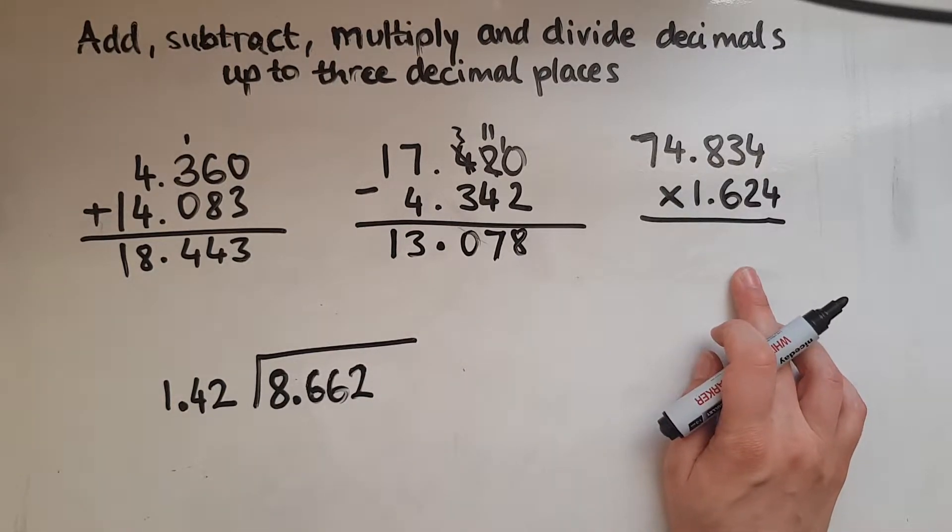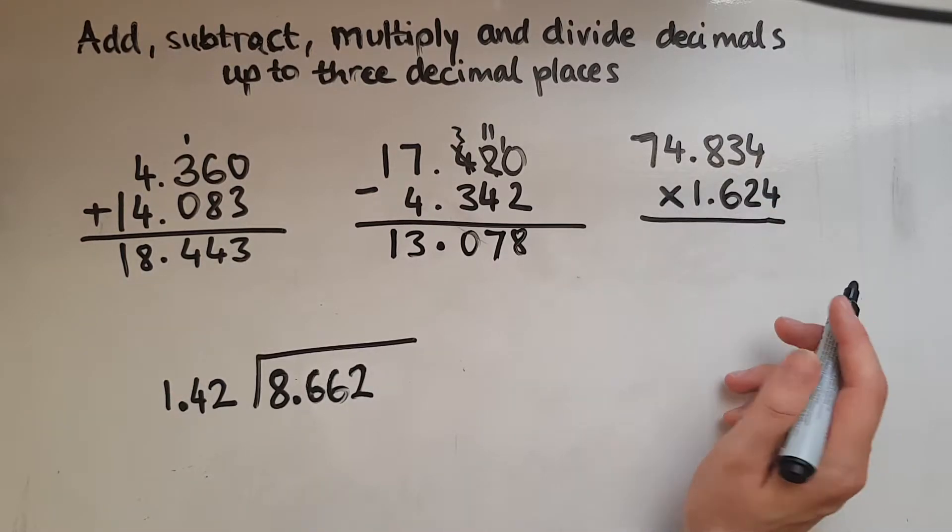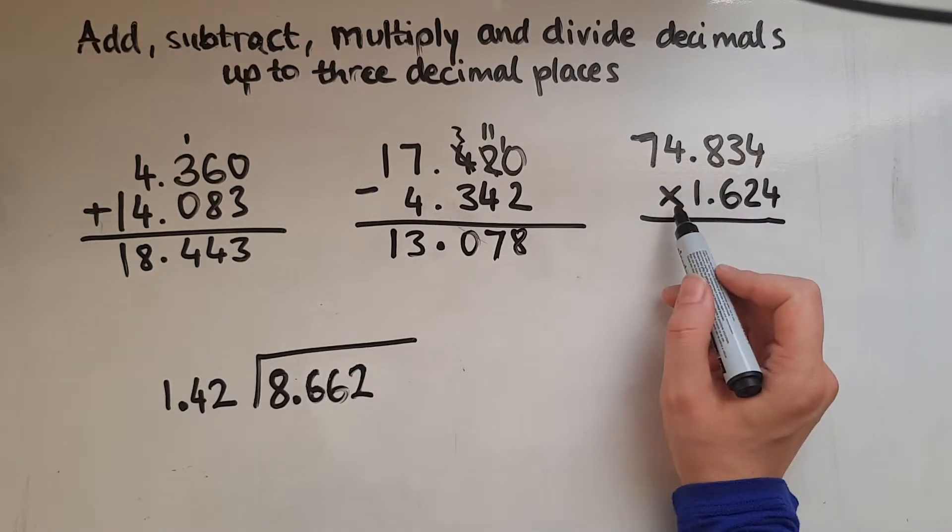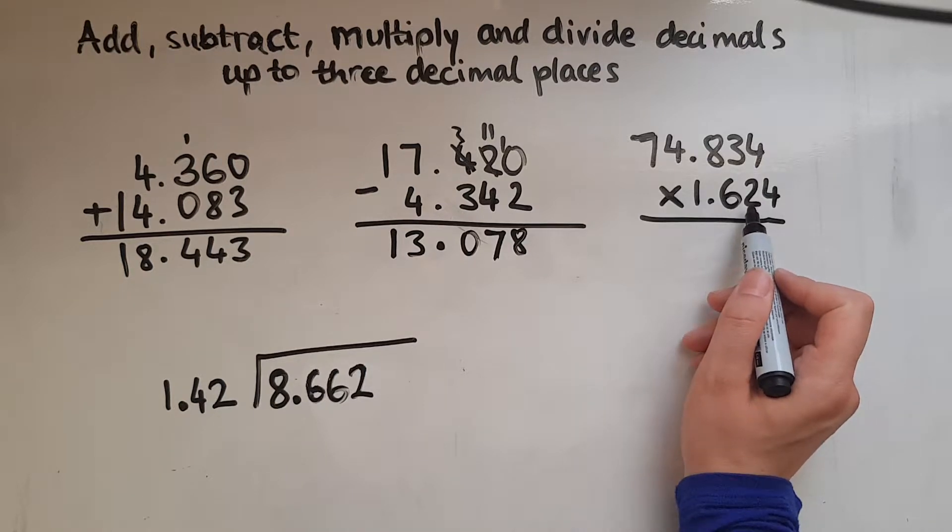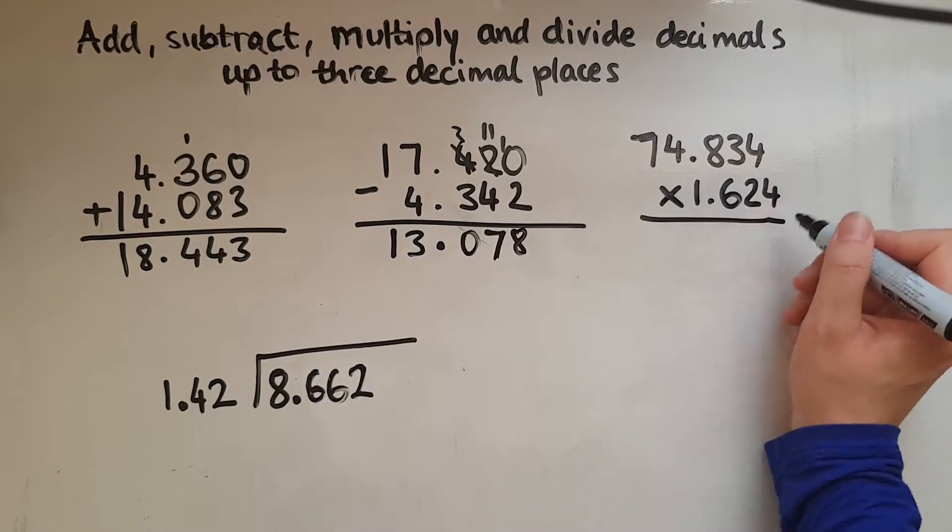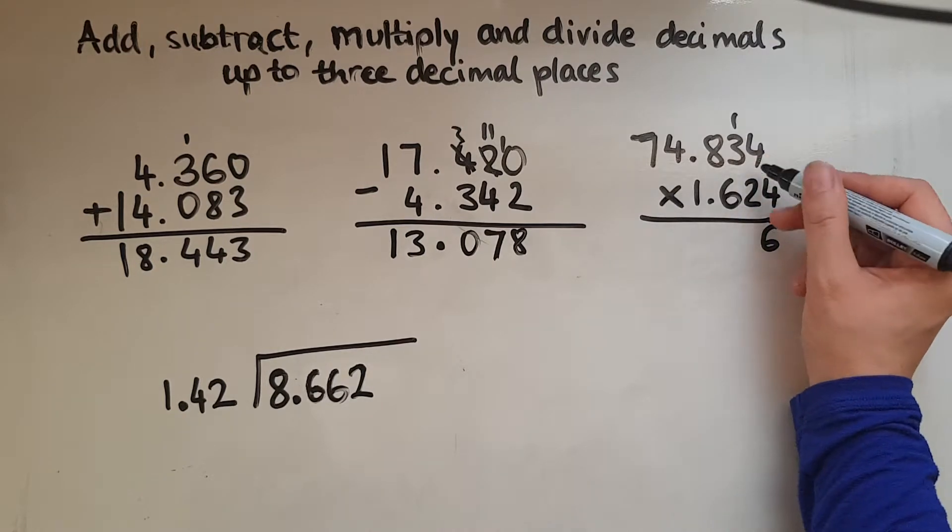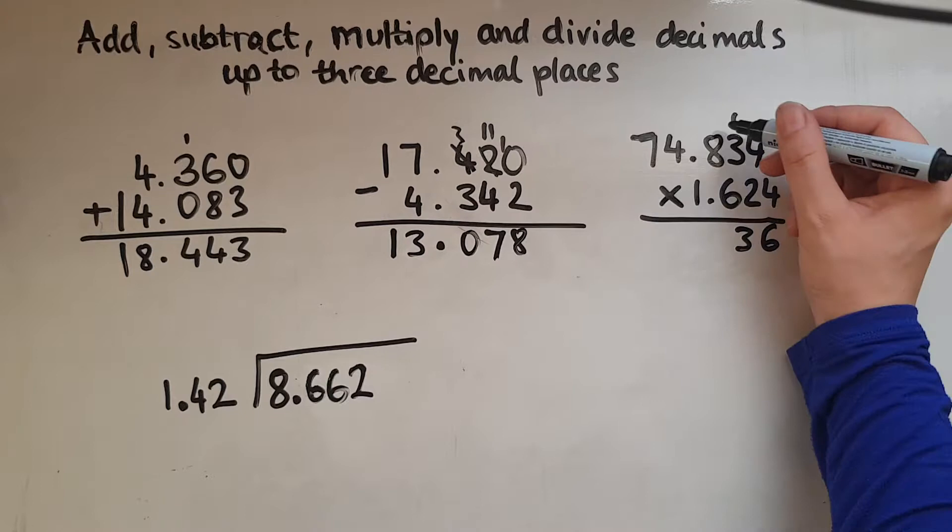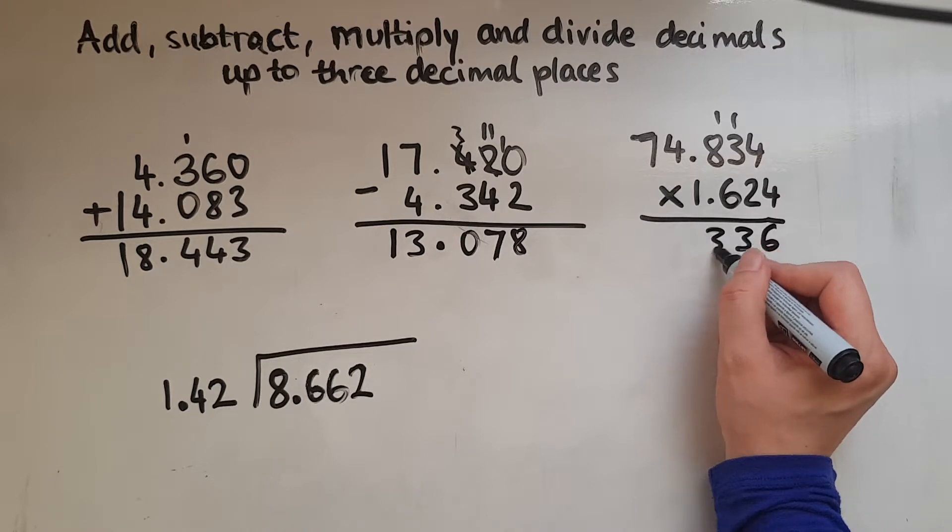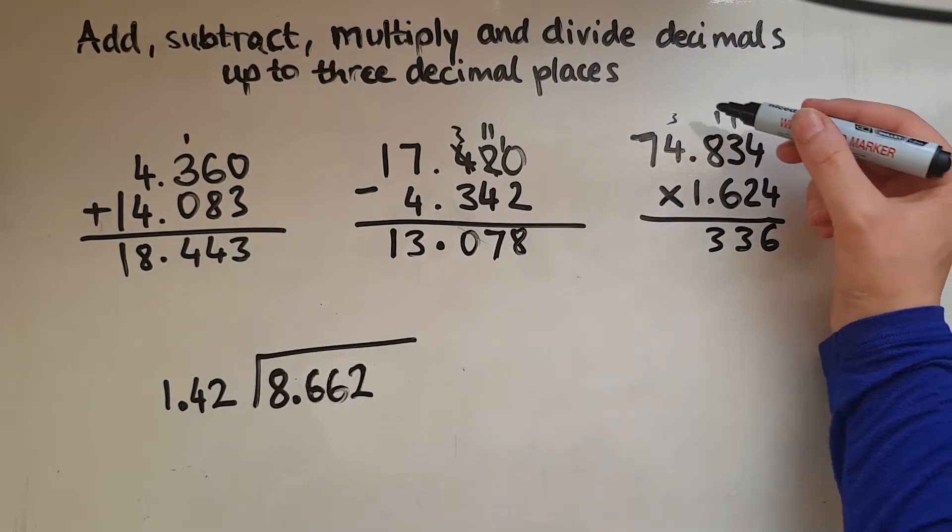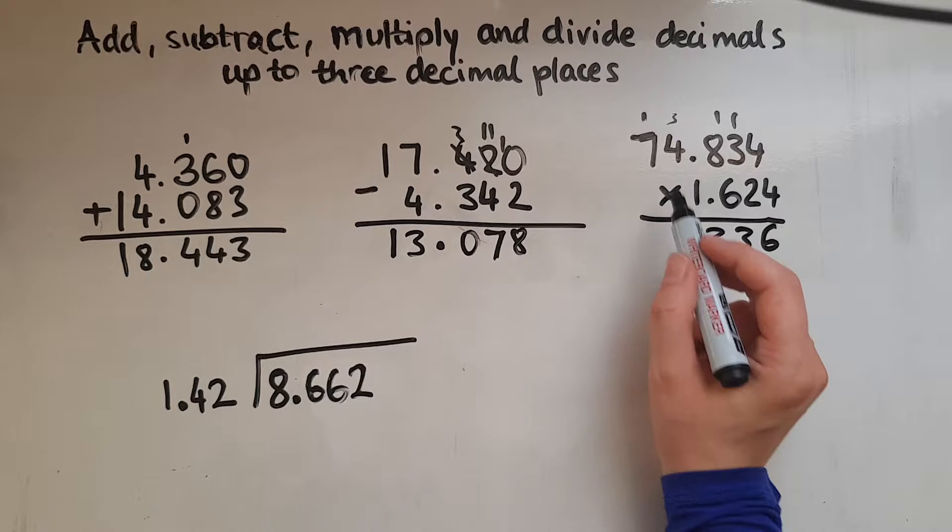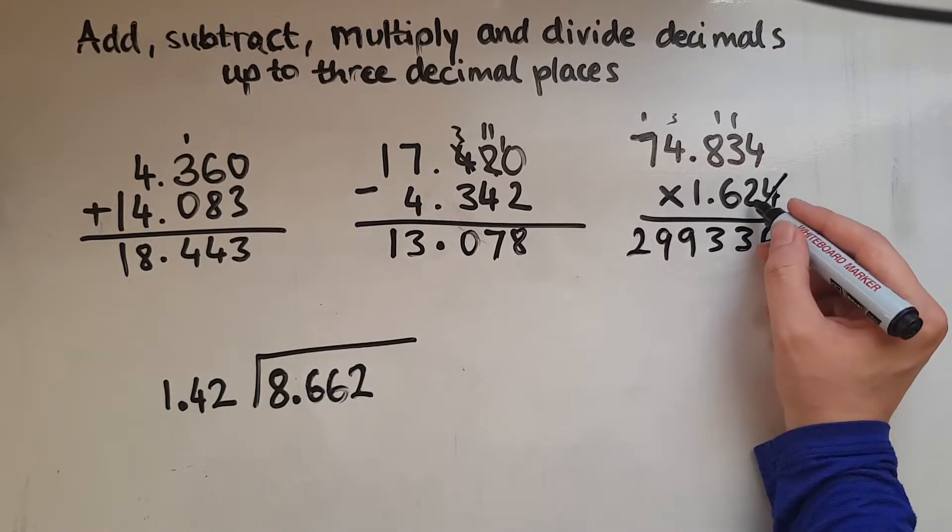In multiplication, again, we treat it as whole numbers, ignoring the decimal points and then we add the decimal points later on. So we'll treat this as 74,834 multiplied by 1,624. So we'll start with the 4 again. So 4 times 4 is 16, so 6 and 1 carried over. 4 times 3 is 13, so 3 and 1 carried over. 4 times 8 is 32, and the 1 is 33. So 3 carried over this time. 4 times 4 is 16, and the 3 is 19. So 9 and 1 carried over. 4 times 7 is 28, and the 1 is 29.